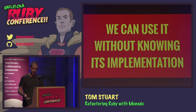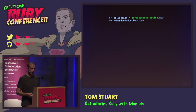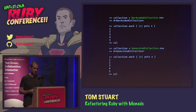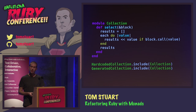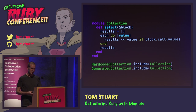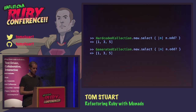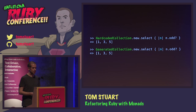We can use the each operation without knowing its implementation — from the outside, both hard-coded and generated collections behave like a collection of the numbers one to five. We can define more collection operations on top of the one operation we already have. Here's a method called select that calls each and accumulates all the values that make the block return true. In Ruby, of course, we have a module called Enumerable that already has select, count, map, inject, and tons of other helpful stuff that all sits on top of this one each method.